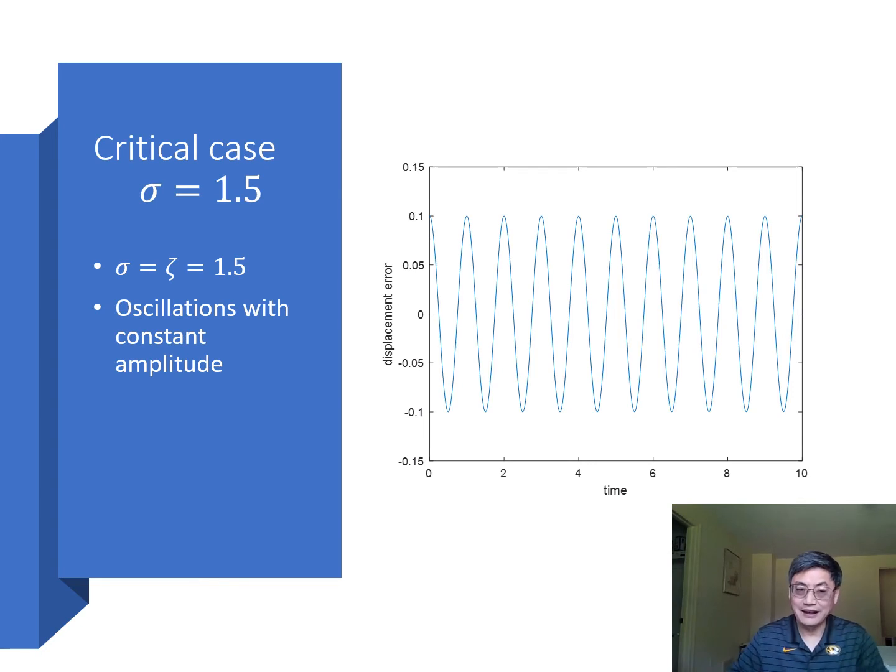At the criticality, the response of the system starting with any error shows that the oscillation has a constant amplitude. This kind of indicates this unique threshold where amplitude just remains constant.